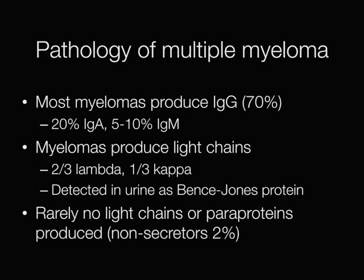Most myelomas produce IgG, around 70% of them, and a smaller proportion produce IgA or IgM. Around two thirds of myelomas produce lambda light chains and one third produce kappa. The light chains can pass through the kidneys into the urine where they are detected as Bence-Jones protein. Occasionally the myeloma cells do not produce light chains or paraproteins; these cases are known as non-secretors, and approximately 2% of patients with myeloma are non-secretors.